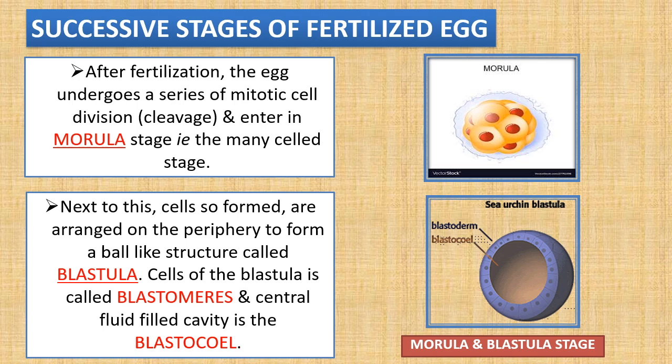Now let us discover the successive stages of a fertilized egg. After fertilization, the egg undergoes a series of mitotic cell divisions — what is called cleavage — and enters the morula stage, that is the many-cell stage. Next, the cells so formed are arranged on the periphery to form a ball-like structure called the blastula. Cells of the blastula are called blastomeres, and the central fluid-filled cavity formed is called the blastocoele. You can see in the figure the morula stage and then cells arranged on the periphery to form a blastula with an outer blastoderm layer and inner blastocoele fluid-filled cavity.